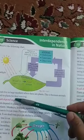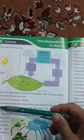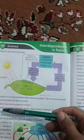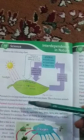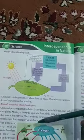Animals depend on plants and plants depend on animals. Now, how do animals depend on plants? Our first point is: animals depend on plants for shelter.